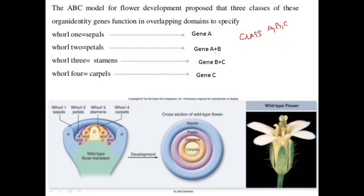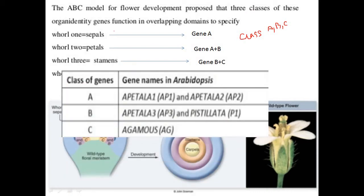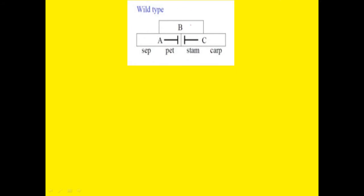These three genes A, B, and C interact with each other and regulate the development of the four different whorls. The class A genes are APETALA 1 and APETALA 2, the class B genes are APETALA 3 and PISTILLATA, and class C is AGAMOUS. This is the scenario of the wild type flower where the expression of all three genes occurs and we see four different whorls: sepal, petal, stamen, and carpel.